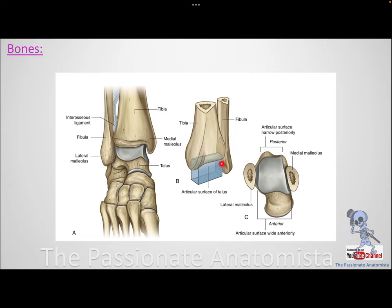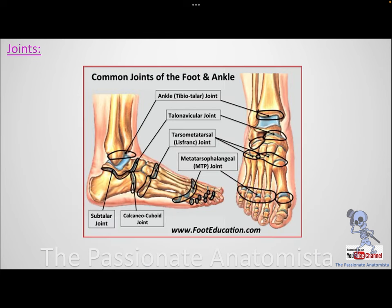The fibula also participates in the ankle joint — you can see its articular surface contributing to it. The ankle joint allows dorsiflexion and plantar flexion. The subtalar joint, which is the joint between the talus and calcaneus, is the joint responsible for inversion and eversion. Make sure you know the difference between these joints and their functions.